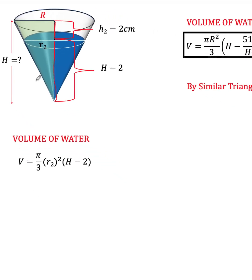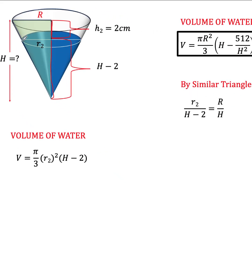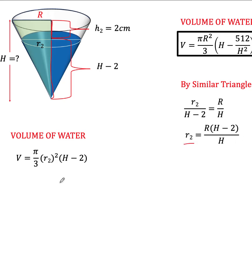We need again to look at the right triangle. Using similarity, we can form this proportion: the base of the smaller triangle r sub 2 over its height (H minus 2) equals the base of the bigger triangle r over its height H. Solving for r sub 2, we get r sub 2 equals r times (H minus 2) all over H. We can substitute this value for r sub 2 in the volume formula.